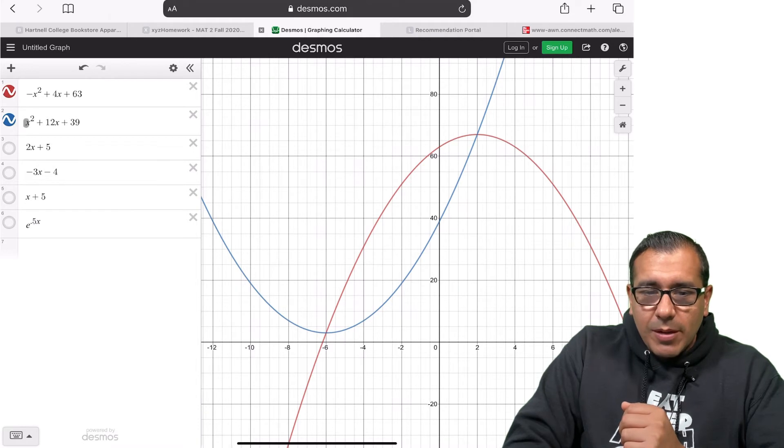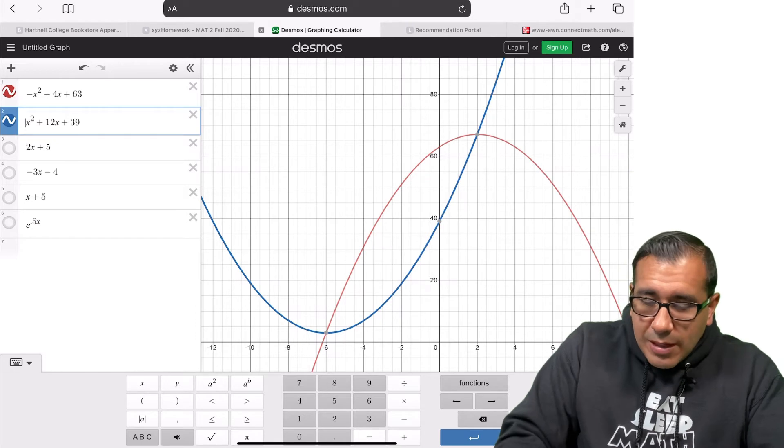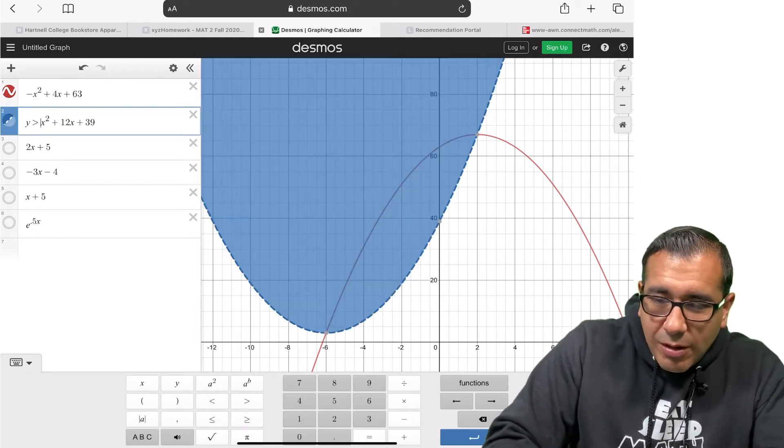So here, let me do something creative. Let me look at for this bottom function, which is in blue. Let me say y is greater than. You don't have to do this, but just so you could see what area I'm actually referring to.